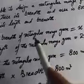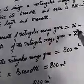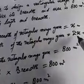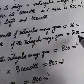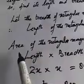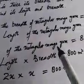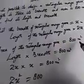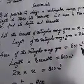Kyunki agar hum breadth ko x rakhenge to length uski double hai, twice hai to 2x banegi. Now area of the rectangular mango groove is 800 meter square jesa ke question mein bataya gaya hai.